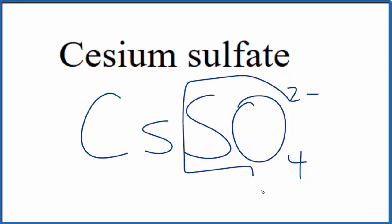We know the whole sulfate ion here is 2-. Cesium, that's in group 1 on the periodic table. That's going to be 1+.